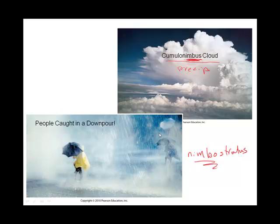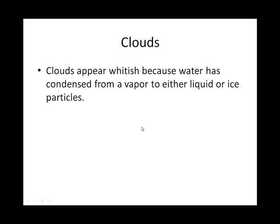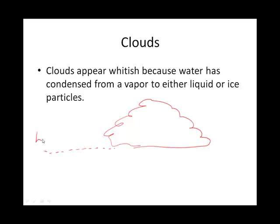Precipitation, by definition, is water returning from the atmosphere to the geosphere. Anytime you see a cloud, they're going to have flat bottoms, and the reason they're going to have relatively flat bottoms is this elevation is what we call the LCL, or the lifting condensation level.